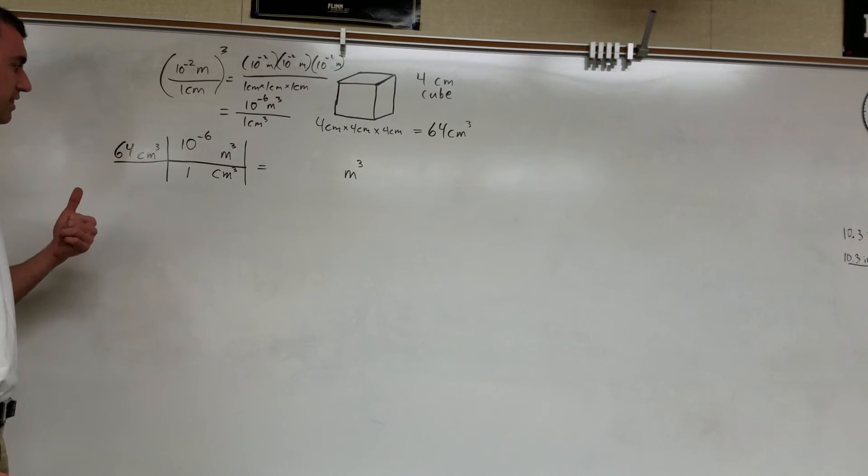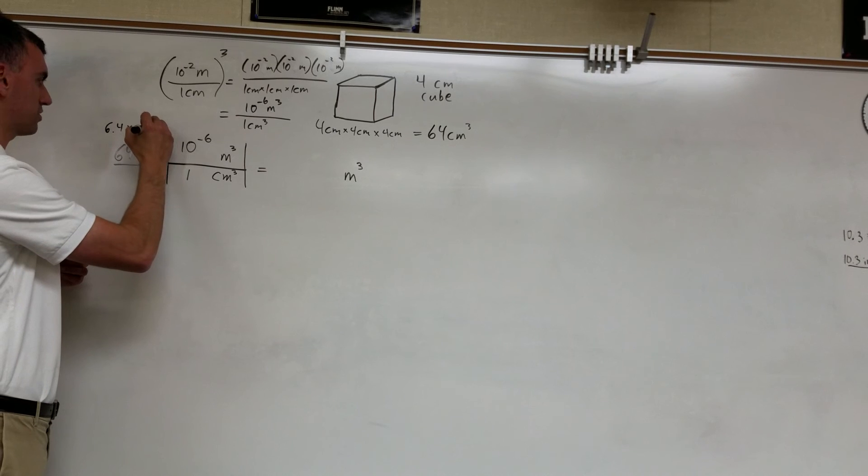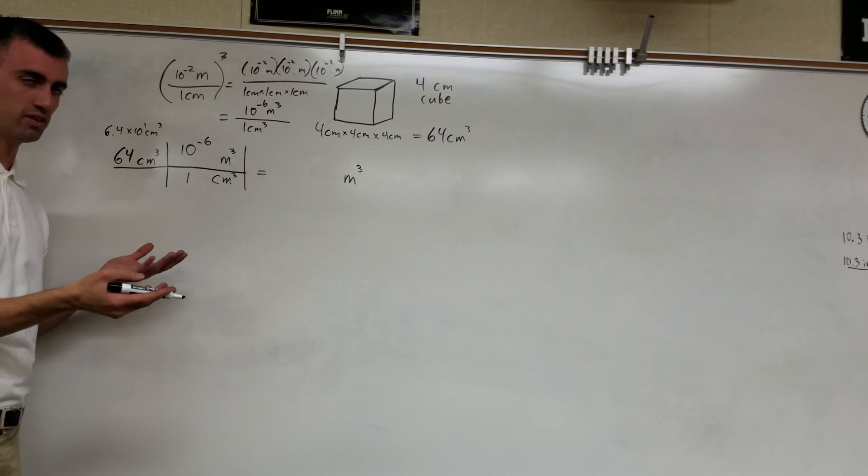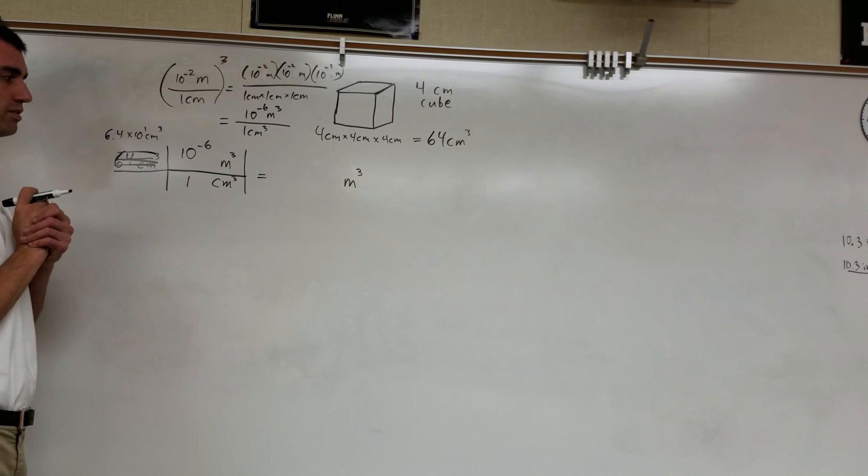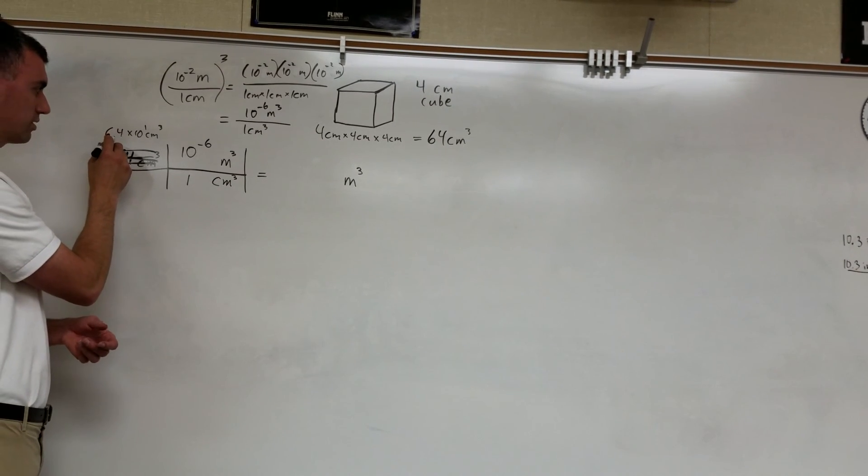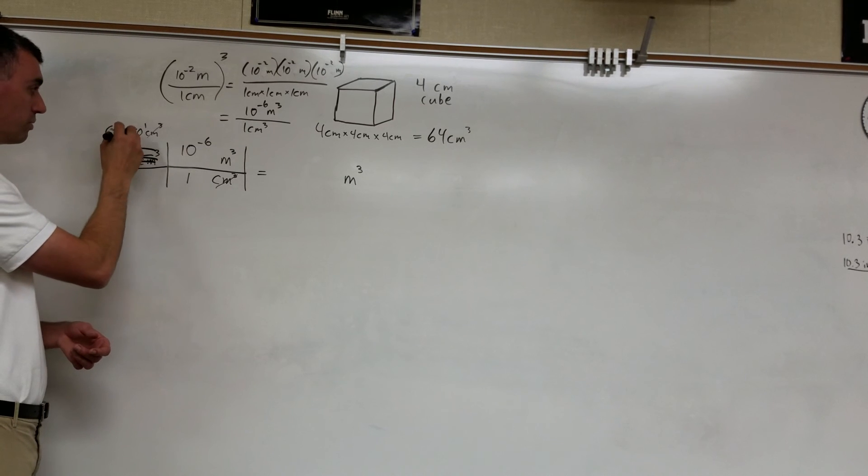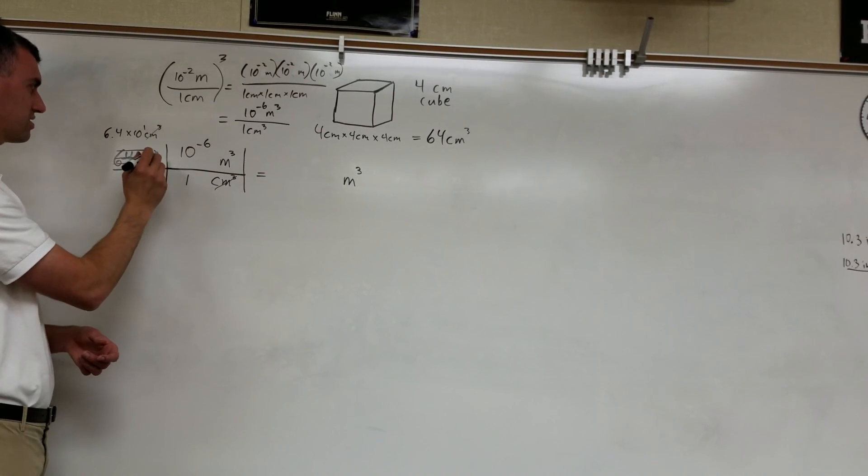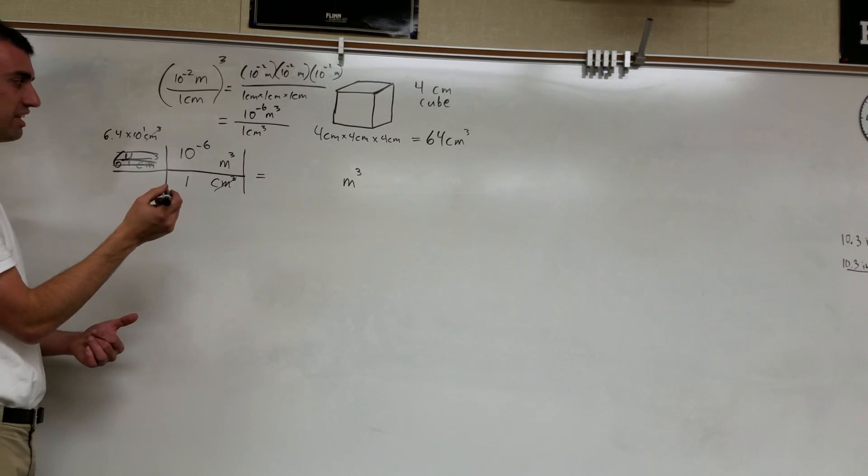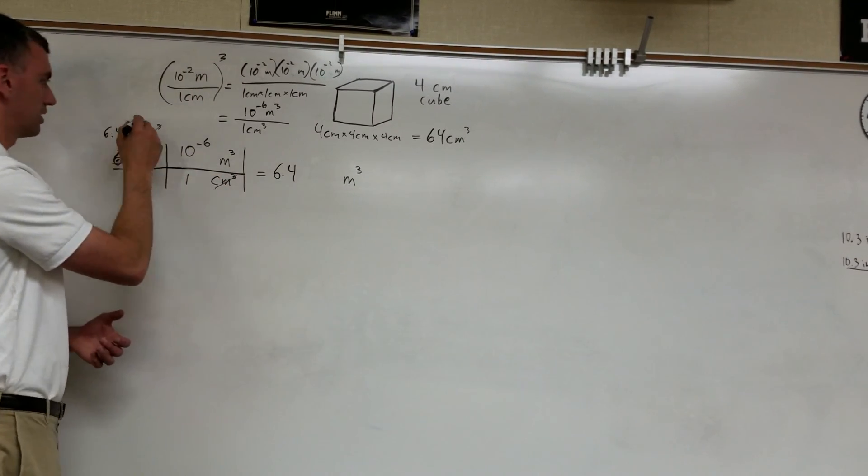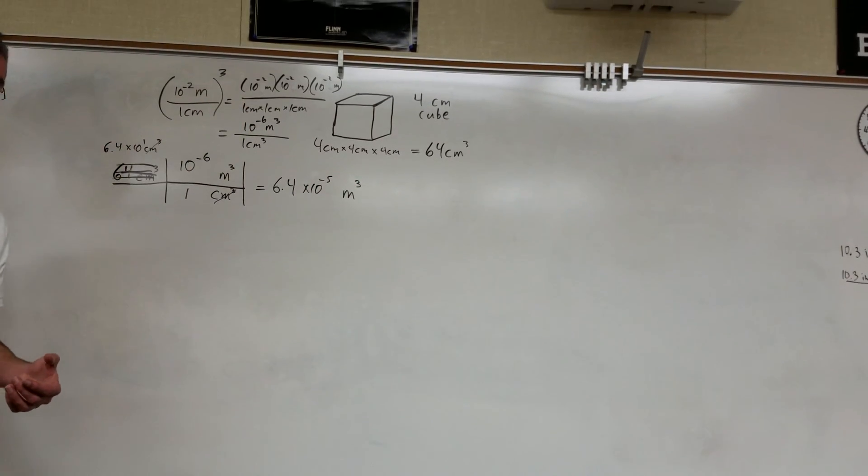Now what I can do to make that a little easier, is I can change 64 into 6.4 times 10 to the first cubic centimeters. Your final answer is going to be in scientific notation, so instead of having to move around decimals at the end, it's actually easier to do this. 6.4 times 10 to the 1 cubic centimeters. Cubic centimeters cancels cubic centimeters. Final answer is cubic meters. We multiply these by each other. 10 to the first times 10 to the negative 6. You're basically going to take 1 plus a negative 6, and that's going to add up to negative 5. So, 6.4 times 10 to the negative 5th cubic meters. There you go. Your volume in cubic centimeters converted to cubic meters.